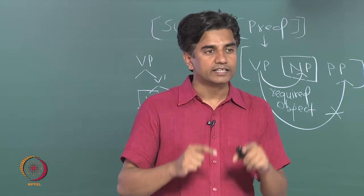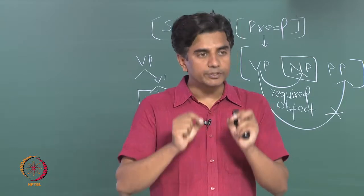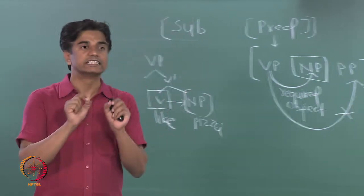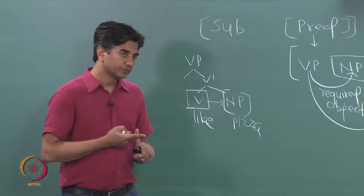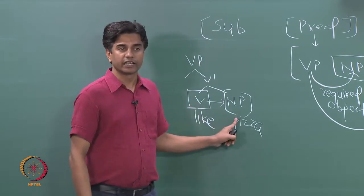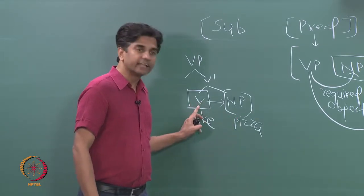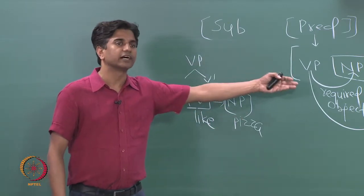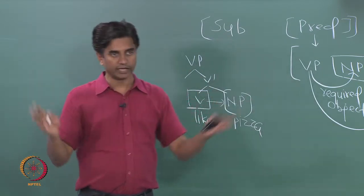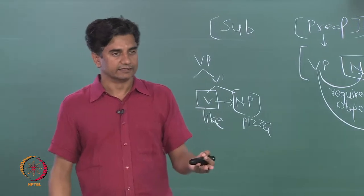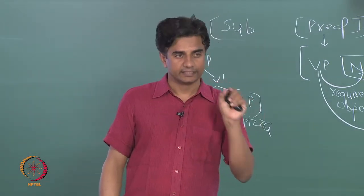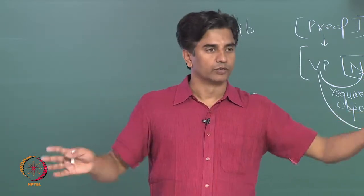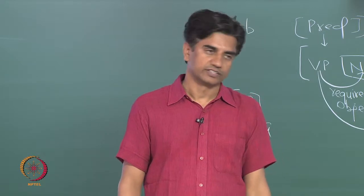Sometimes sub-categorization is a little bit rigid. This V sub-categorizes for an NP, but there could be some other heads which sub-categorize for other kinds of elements. As a whole, this is called C-selection — that is, certain heads specifically select certain types of category. The whole process is called categorial selection or C-selection. These are just names, and we can say the same things with simpler terms.